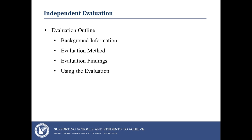Looking at the independent evaluation, here's the evaluation outline. The State Department is looking for four sections: background information, evaluation method, evaluation findings and recommendations, and using the evaluation. The directors will have involvement in each stage, but stage four will be your main involvement — providing a narrative of how you're going to disseminate this information or use this evaluation to improve your program.